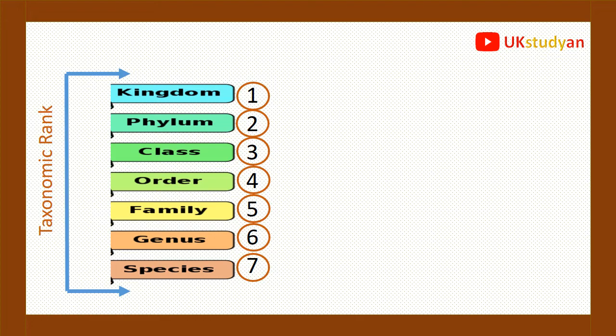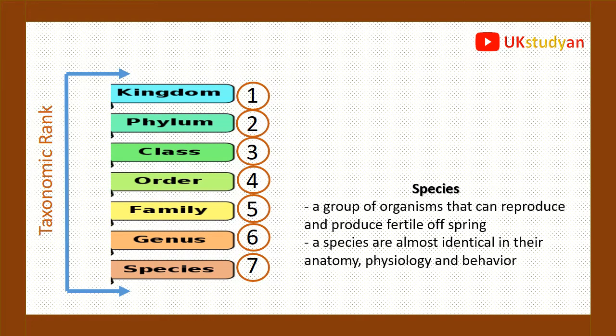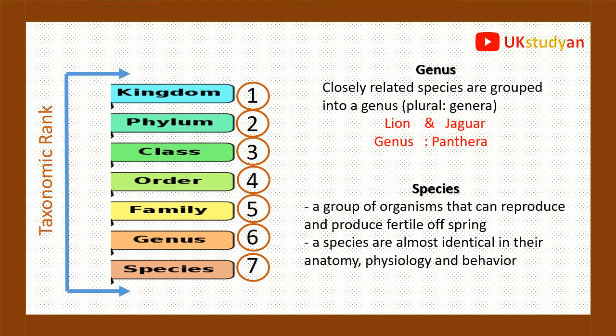Species is a group of organisms that can reproduce and produce fertile offspring. Species are almost identical in their anatomy, physiology, and behavior. Closely related species are then grouped into a genus.